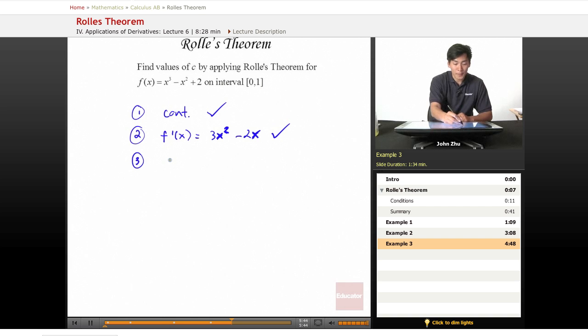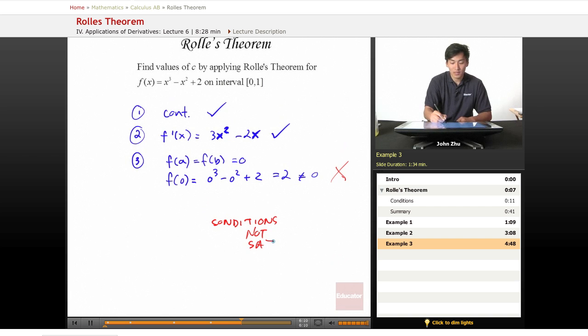Now 3, f(a) must equal f(b) must equal 0. So f(a), which equals 0³ - 0² + 2 equals 2, which does not equal 0. So once again, the conditions are not satisfied. And you cannot carry on with the theorem if the conditions are not satisfied.